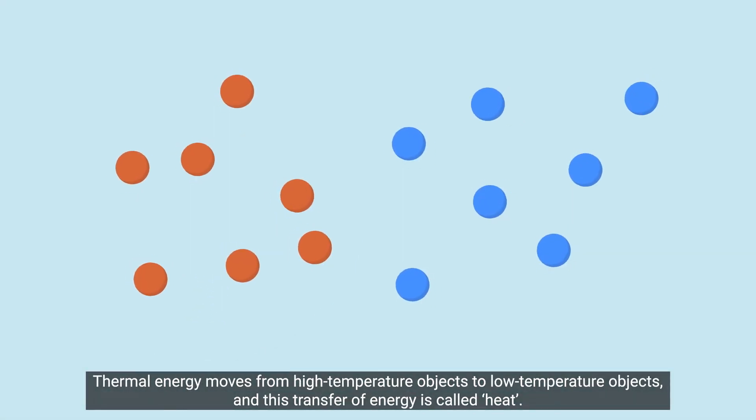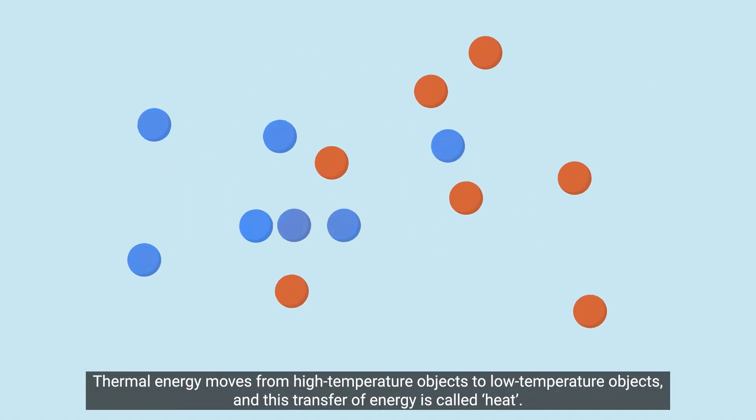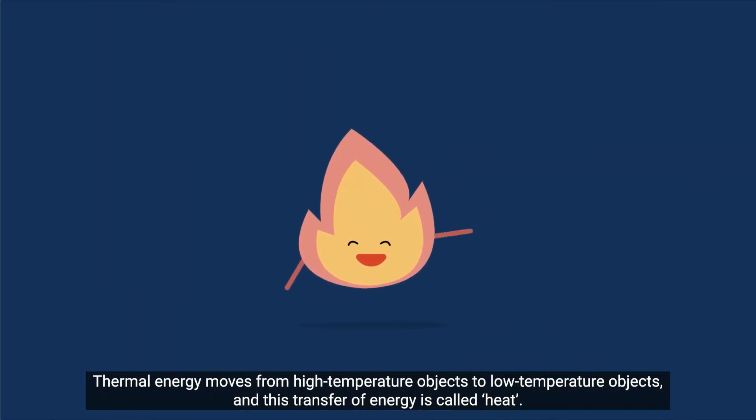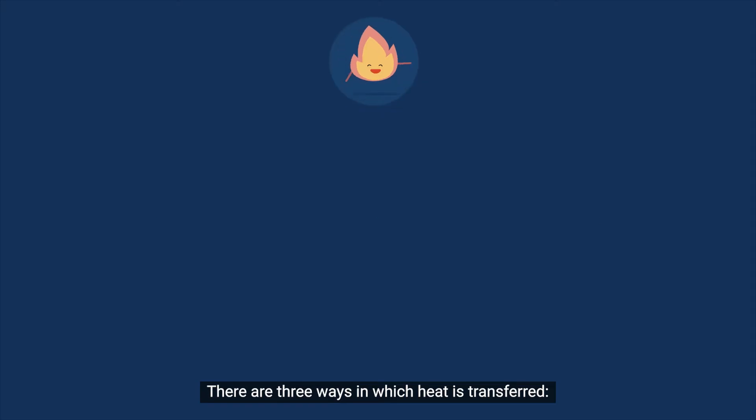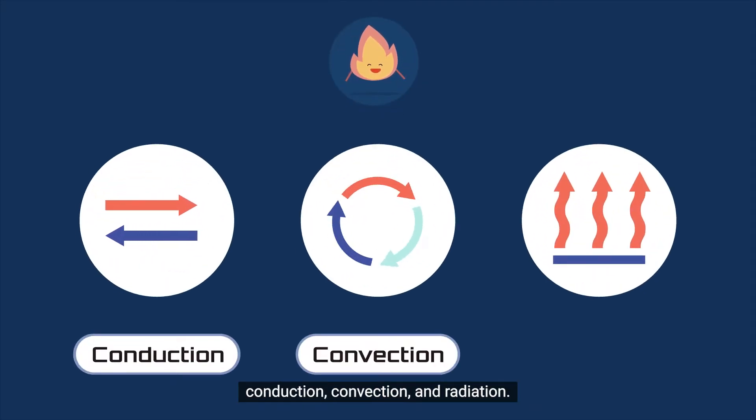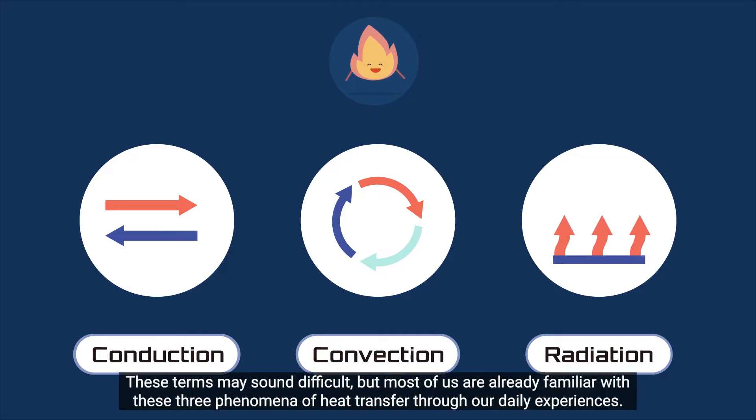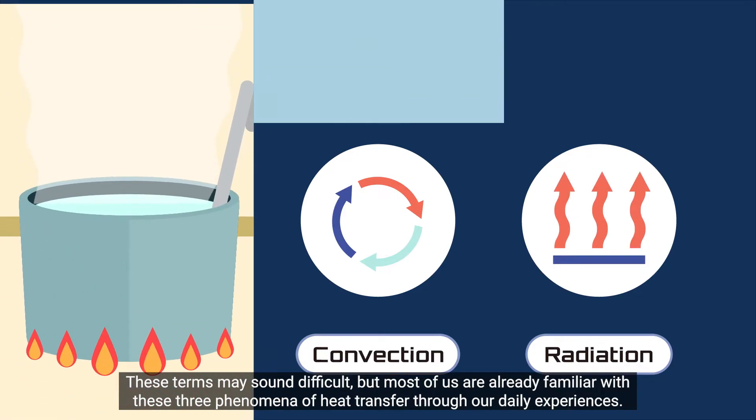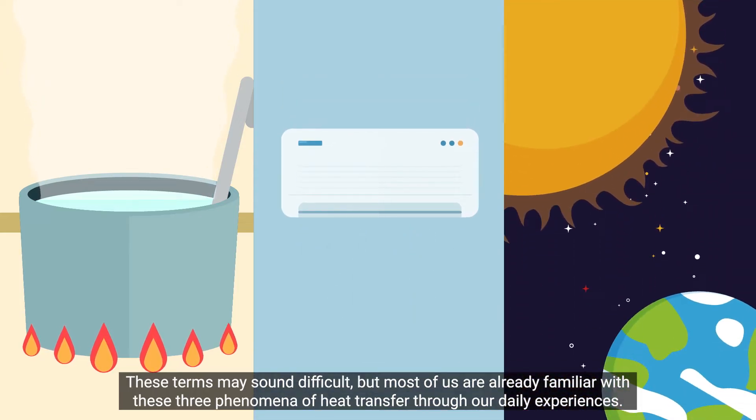Thermal energy moves from high-temperature objects to low-temperature objects, and this transfer of energy is called heat. There are three ways in which heat is transferred – conduction, convection, and radiation. These terms may sound difficult, but most of us are already familiar with these three phenomena of heat transfer through our daily experiences.